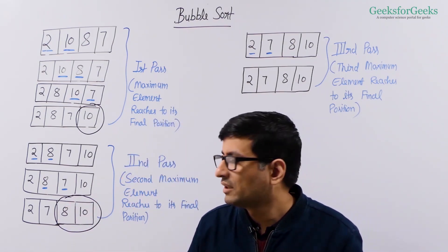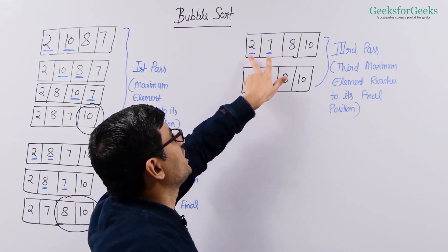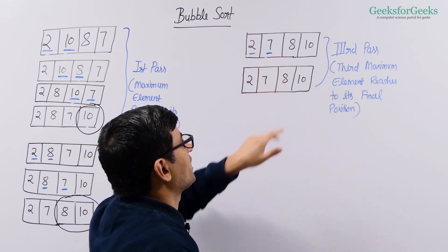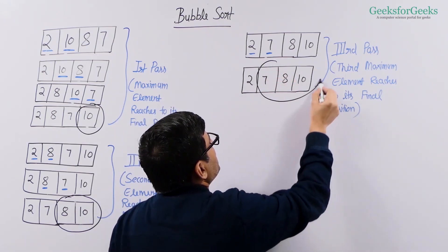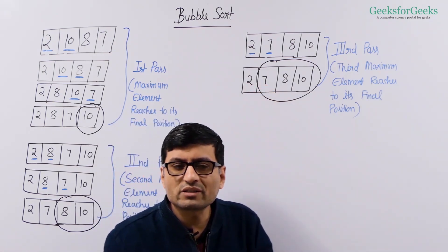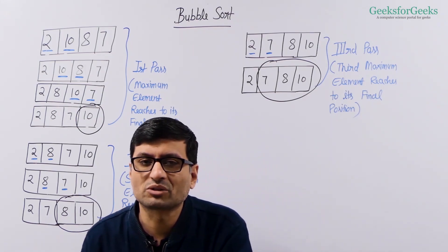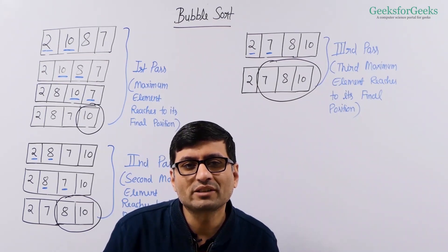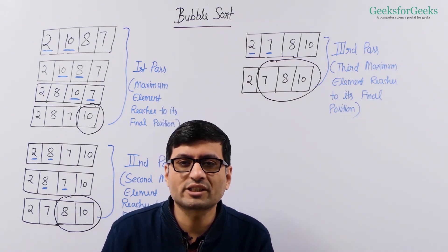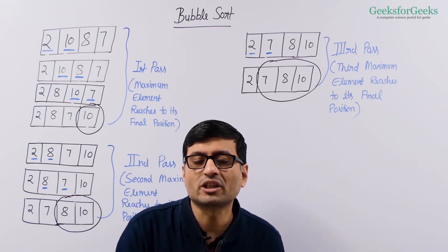Now we move to the third pass. In the third pass, we want to ensure 7 is at its correct position. So in the third pass, we just need to compare these two elements. We decide that they are not out of order, so we keep 7 at its correct position. These three elements are sorted. Once your last n minus 1 elements are sorted, this element is anyway the smallest element, because the last n minus 1 elements are not only sorted, they are the largest n minus 1 elements. So we need to do n minus 1 passes for n elements, because in n minus 1 passes, the n minus 1 largest elements will move to the last n minus 1 correct positions, and the smallest element will be at the first position.